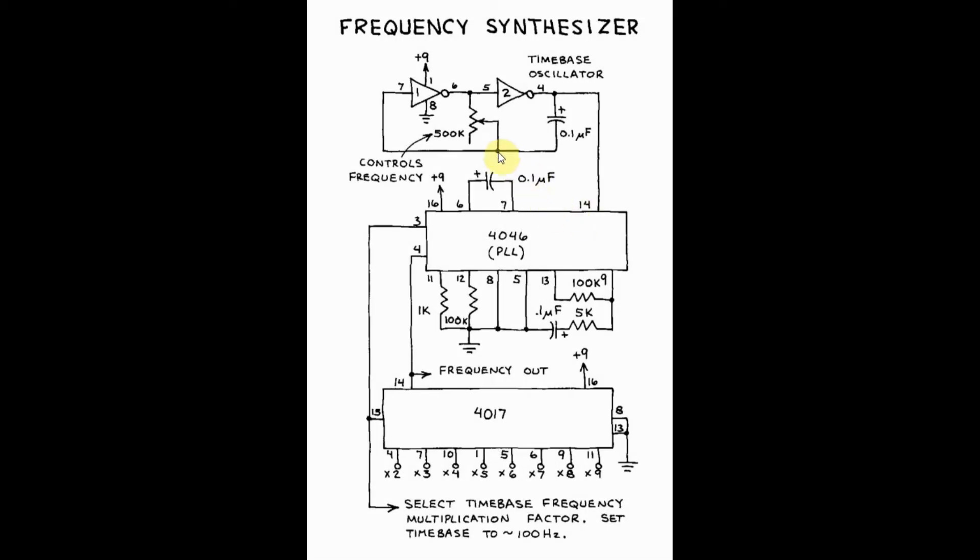This is the frequency synthesizer circuit, which is made of three main components. Here we have the time-based oscillator to generate a clock signal, and we have the phase locked loop using IC 4046 and the decade counter IC 4017.